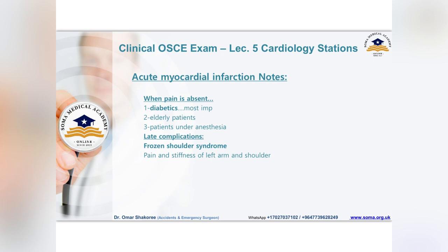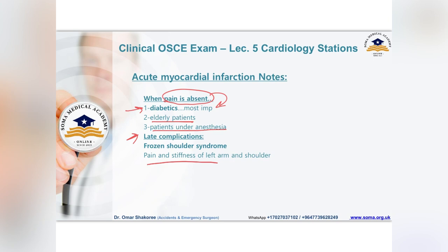Some important notes about myocardial infarction: sometimes pain is absent, especially in diabetic patients — this is called silent MI or silent killer, because the patient does not feel the pain well. Elderly patients and patients under anesthesia may also suffer from silent MI. A late complication of MI is pain and stiffness of the left arm and shoulder, including frozen shoulder syndrome.